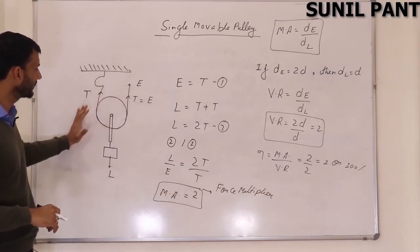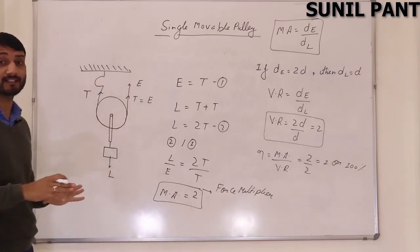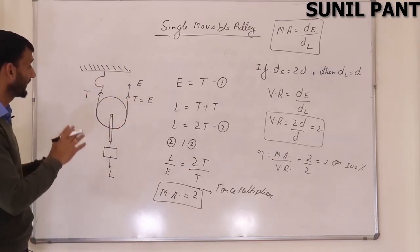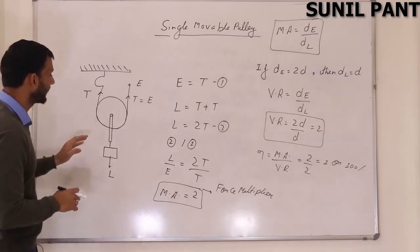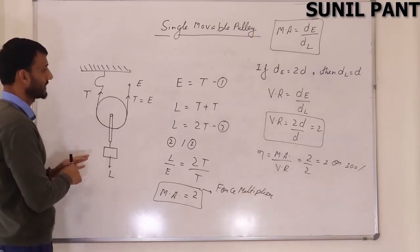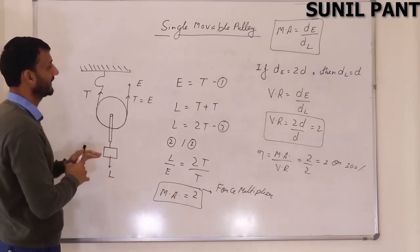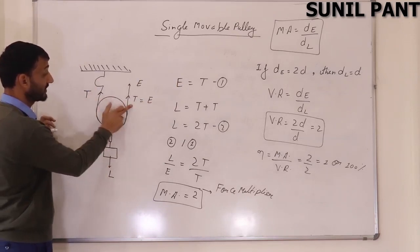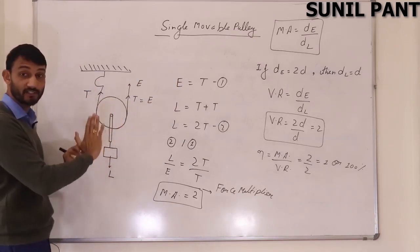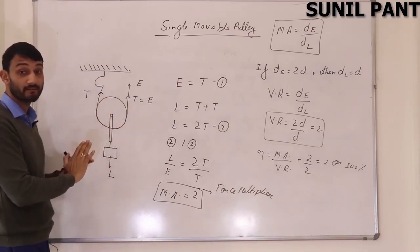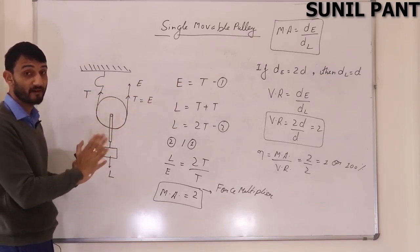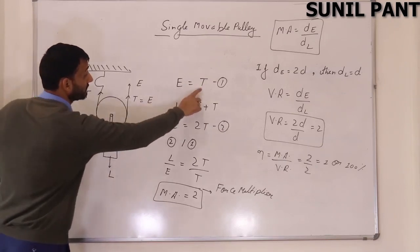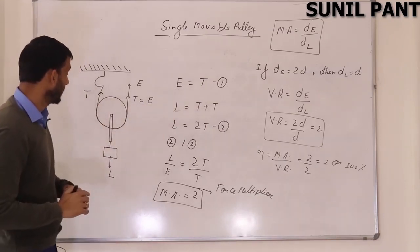This system is not moving at all — it is static. When it is static and at rest, effort will be equal to tension. As you can see, the tensions are in the upward direction only; the tensions will always be in the upward direction. So effort equals tension — this is equation number one.